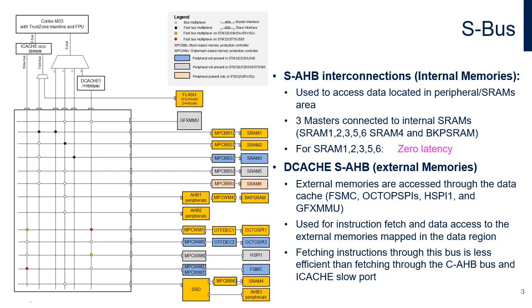Accesses to internal SRAM memories initiated by the Cortex-M33 are performed through the SAHB port. The D-multiplexer connected to the SAHB port selects the slave port in the main bus matrix according to the address: S1 to access SRAM1, S2 to access SRAM2, SRAM5, SRAM6, SRAM4 and backup SRAM, and S3 to access SRAM3. For SRAM1, 2, 3, 5, and 6, latency is zero when no other master currently accesses the SRAM.